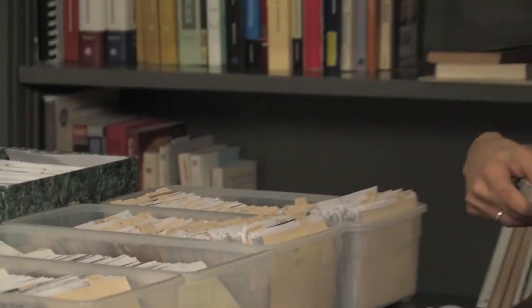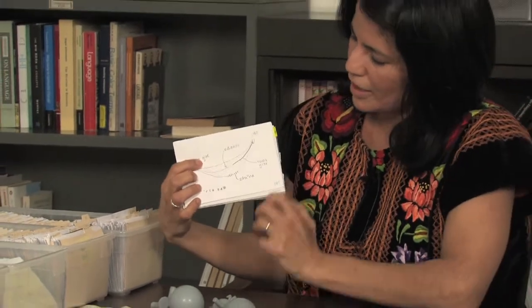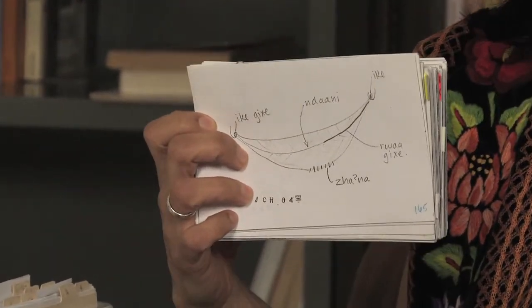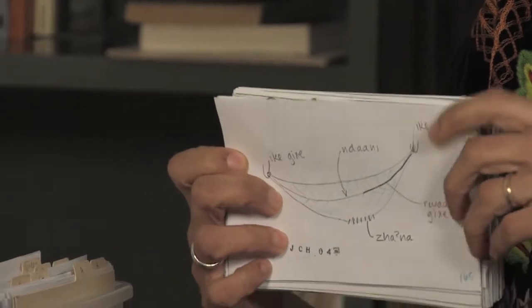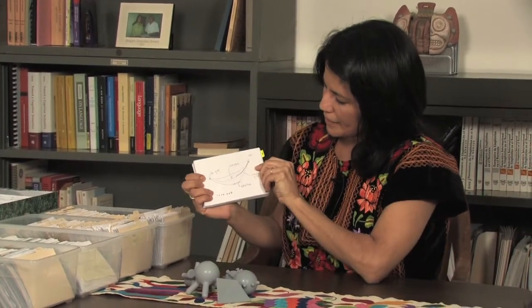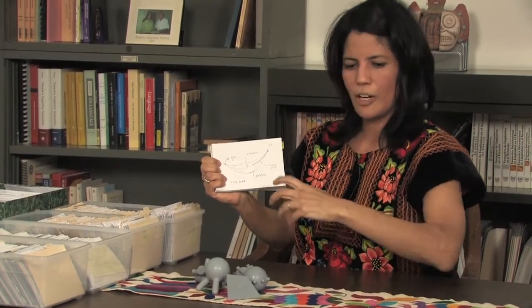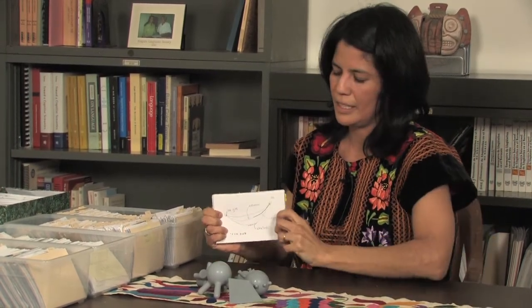Now let me show you some of these data slips, which are some of my favorites. As I mentioned before, I'm very interested in the semantics of spatial relations — how do you say a cup is on the table? How do you express the location of one object with relation to another? I got interested in this because in Zapotec languages, parts of objects can be described using terms that relate to body parts. For example, in Juchitán, the arm is na, the leg is nye, the head is ike, and the belly is ndani.